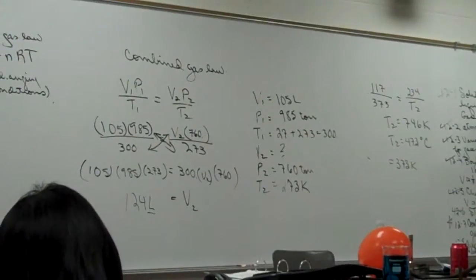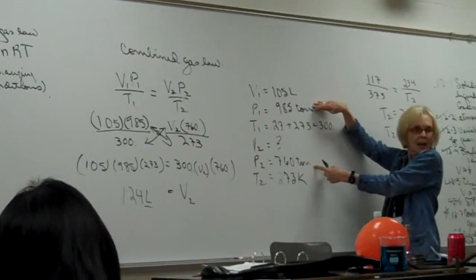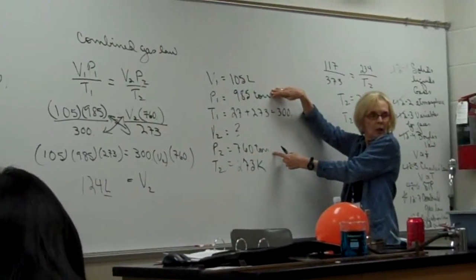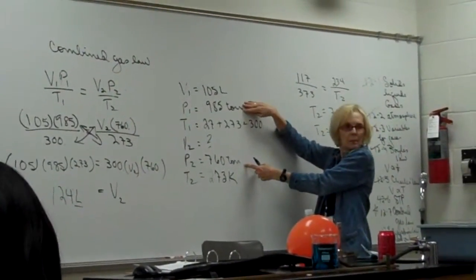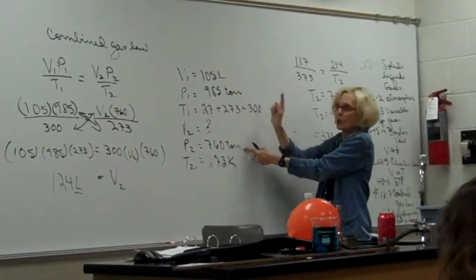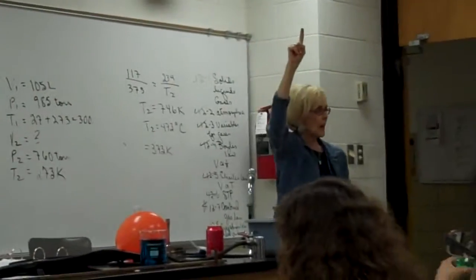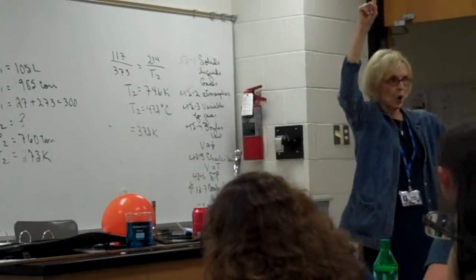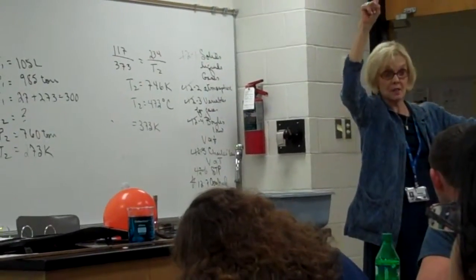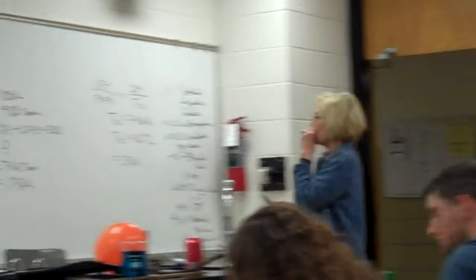Now let's think about this for a moment. Pressure's going down. Where should the volume go? If pressure goes down, what should happen to volume? Go up. But temperature is going down. What do we expect to happen to volume? Go down. We have opposing forces. We really can't predict who's going to win out. So when you have the combined gas law, you've got to work through it all.